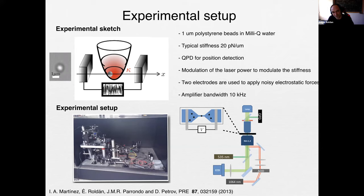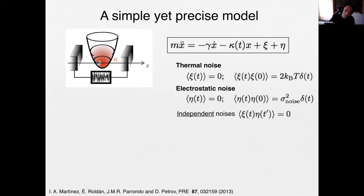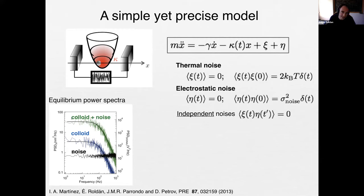This is called the white noise technique. With this, the dynamics of the particle becomes a Langevin equation with a time-dependent linear potential and two noises: ξ (thermal noise from water) and η (electrostatic noise — it's an external force but random, with zero mean, Gaussian). Its amplitude σ² is independent of temperature. From this we can measure the autocorrelation function of x and of the noise — the noise has a flat power spectrum (white noise), while the colloid in the trap has a Lorentzian power spectrum.